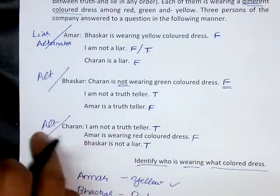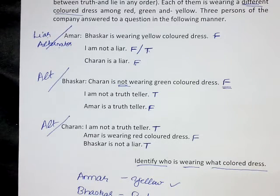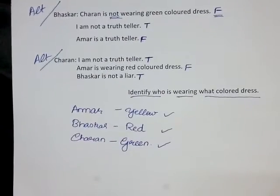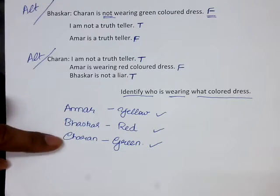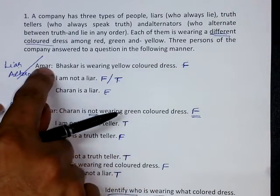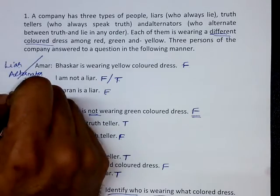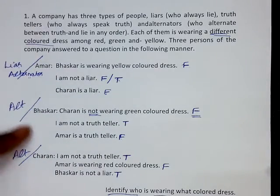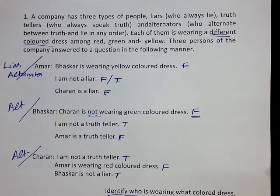This question is now perfectly solved without any inconsistency, conflict, or contradiction. Amar is wearing yellow, Bhaskar is wearing red, and Charan is wearing green. If there is a question that asks about the nature of Amar, we can say Amar is not a truth teller, but he may be a liar or an alternator — with the information provided, we are not in a position to conclude further. Hope this explanation is clear and sufficient. Thank you for watching.